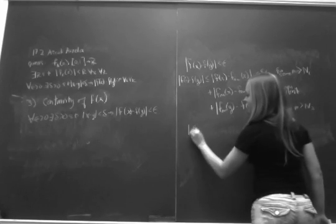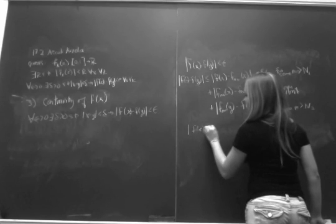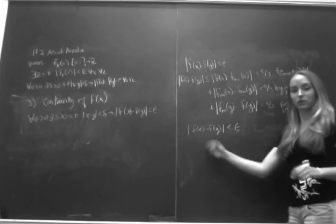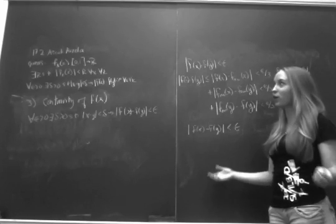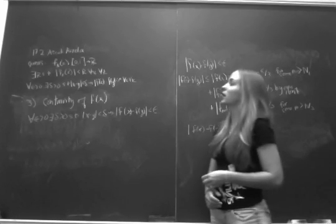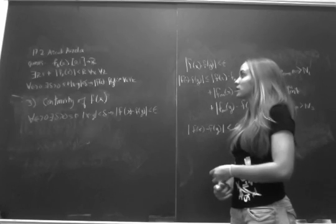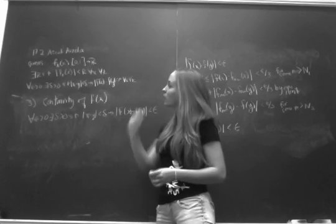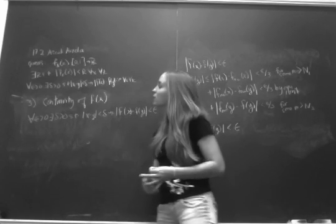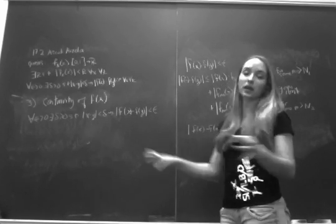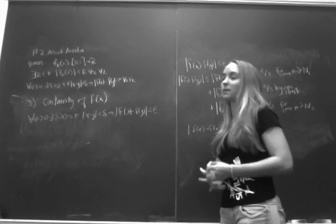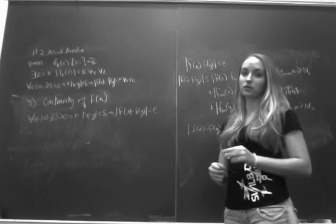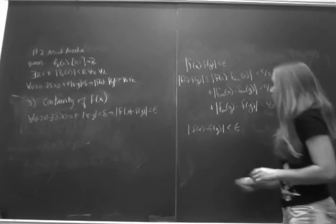Therefore, |f(x) − f(y)| < epsilon, and therefore it converges. So we have shown that given an infinite sequence of uniformly bounded, equicontinuous functions from the interval [0,1] to ℝ, there exists a subsequence that converges to a continuous function f(x).